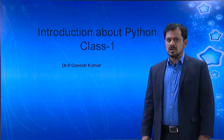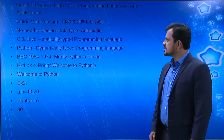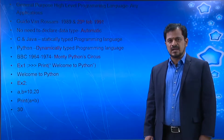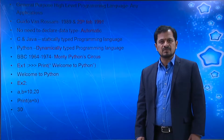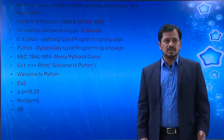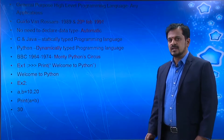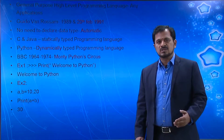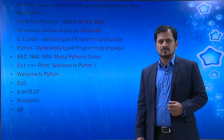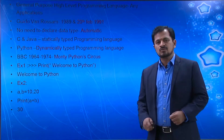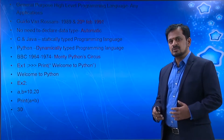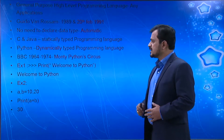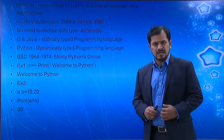We will also see how we can use Python with other software languages and how we can write some small programs. First, Python is a general purpose high-level programming language. By using this language we can develop any kind of application in any environment. When you compare with C and Java, Python is much easier to develop projects — that is why we call it a general purpose high-level programming language.